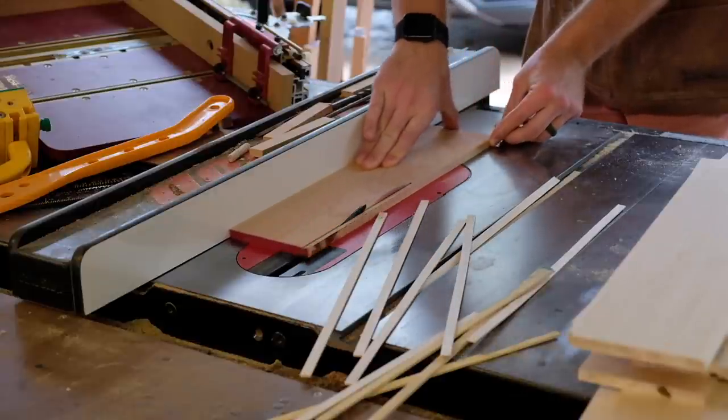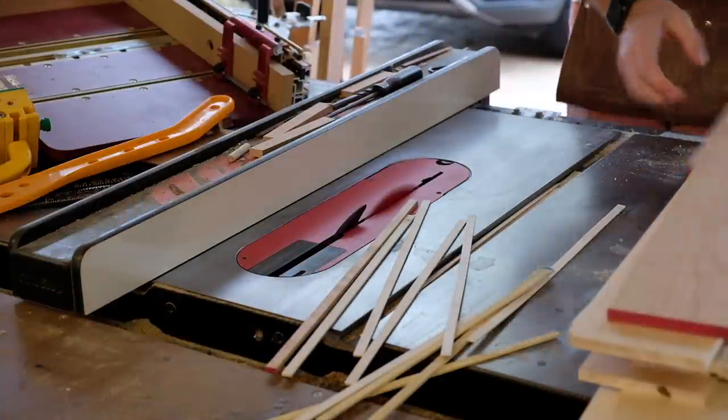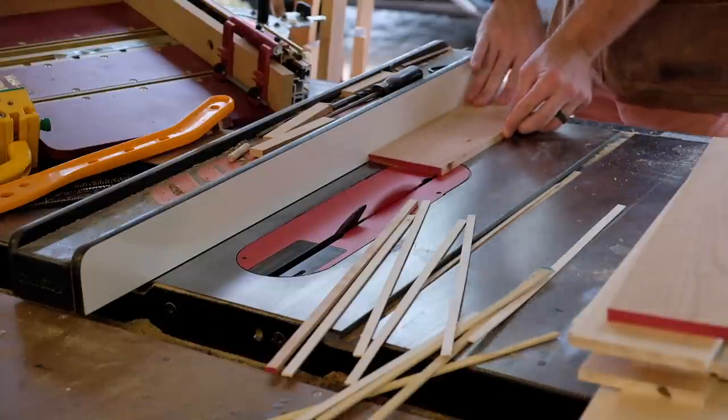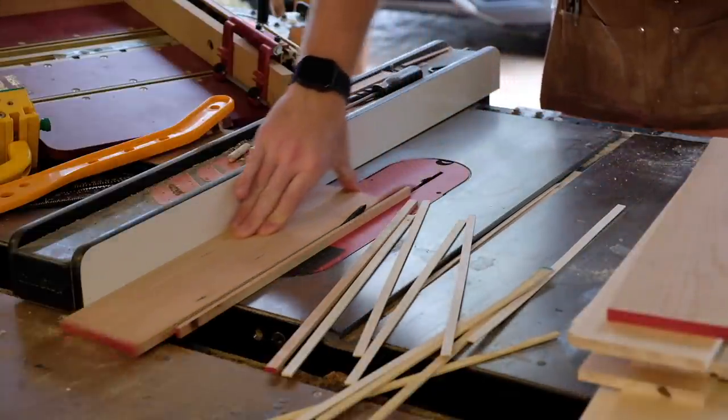While ripping the drawer fronts to width I also rip the drawer sides and backs so that they're all consistent. In this case the drawer sides and back are made of maple.